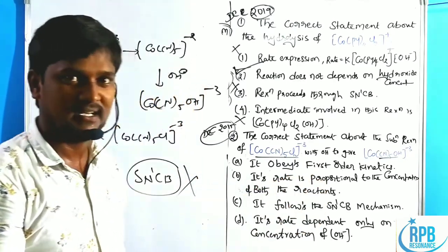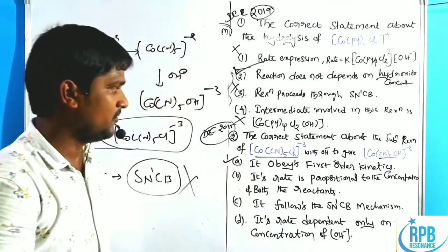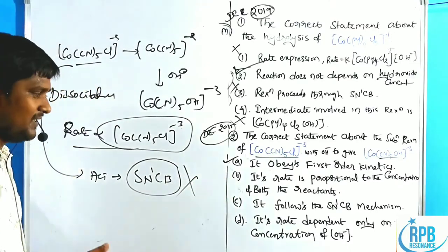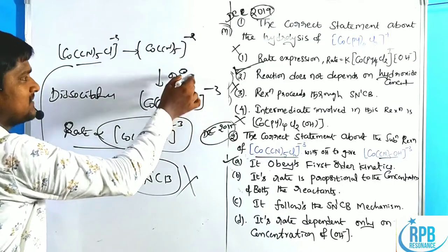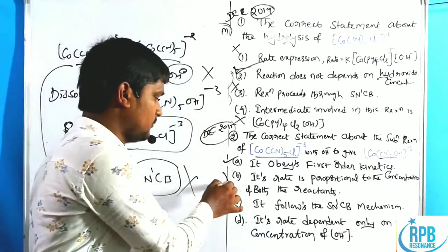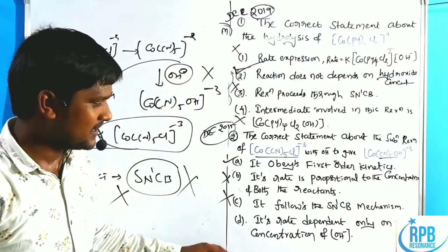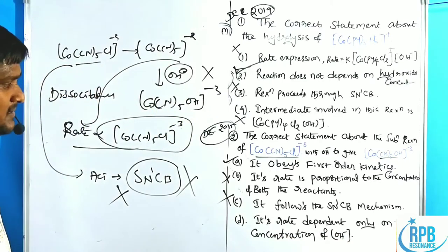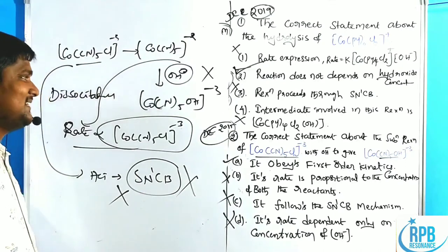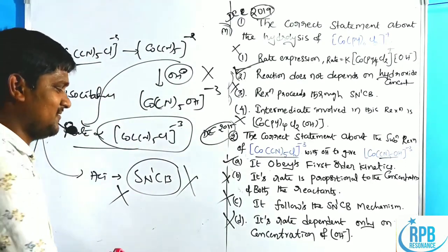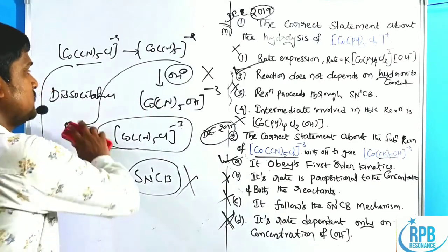Checking the options for question 2: Option A — it obeys first-order kinetics. Undoubtedly correct, because the rate depends only on the substrate concentration. Option B — rate is proportional to concentration of both reactants: wrong, because OH⁻ concentration does not affect the rate. Option C — follows SN1CB mechanism: wrong, because there are no acidic protons. Option D — rate depends only on OH⁻ concentration: this is a silly option, since OH⁻ alone cannot determine the rate without substrate. Therefore, option A is correct.